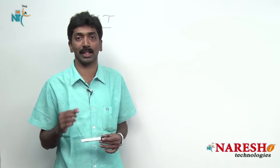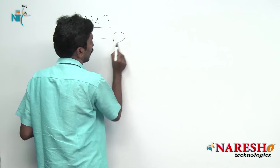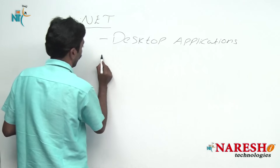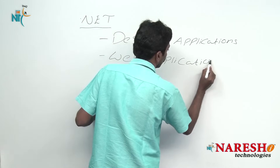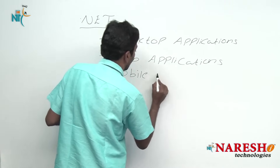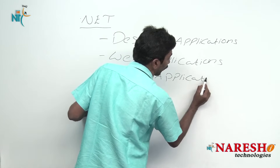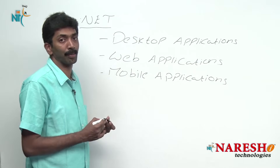When we talk about applications, we need to understand that applications are divided into various categories. We call them desktop applications, web applications, and mobile applications. These are the different categorizations of applications.